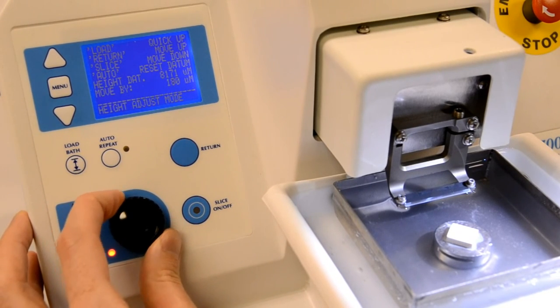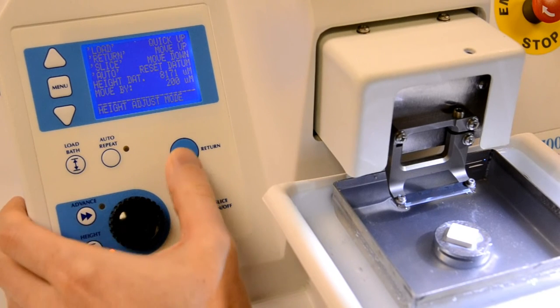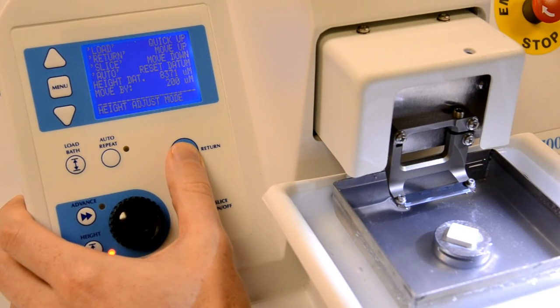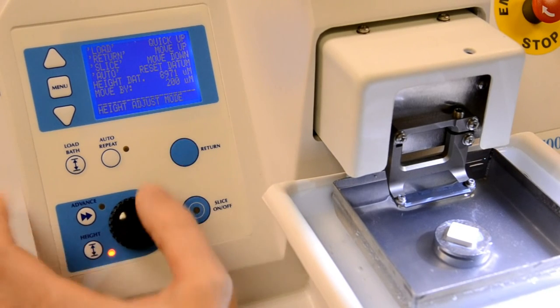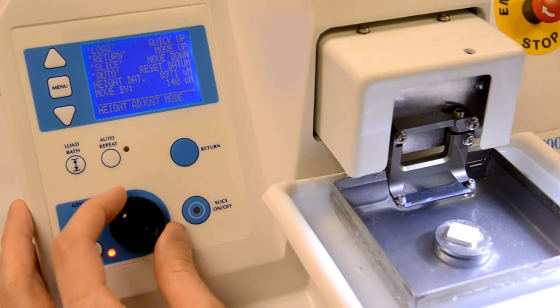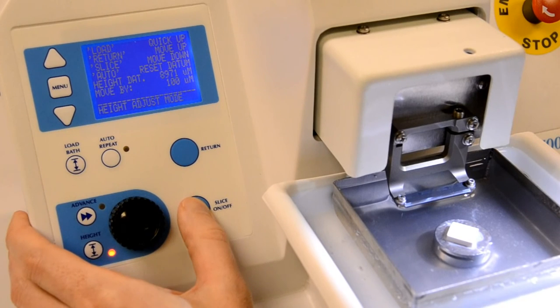Set a movement amount by using the rotary knob and use the return or slice on-off keys to either raise or lower the bath by this amount to move the specimen to a suitable height. You can repeat this as often as you wish until you are satisfied.